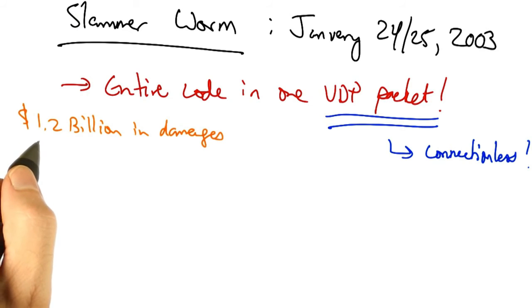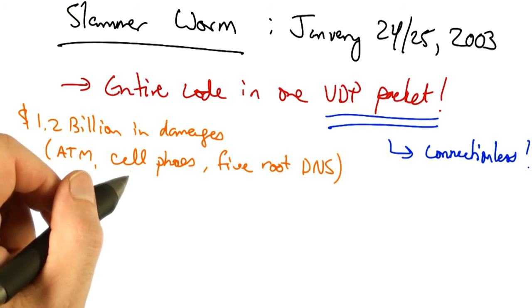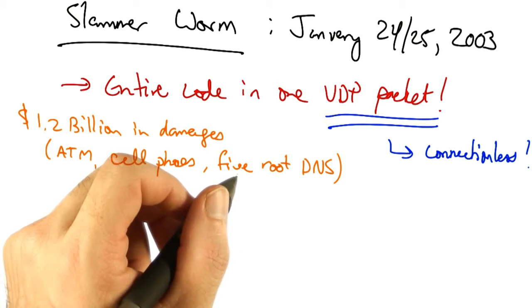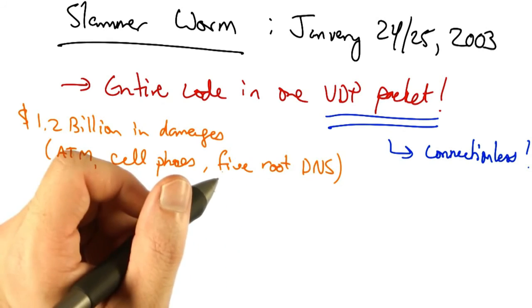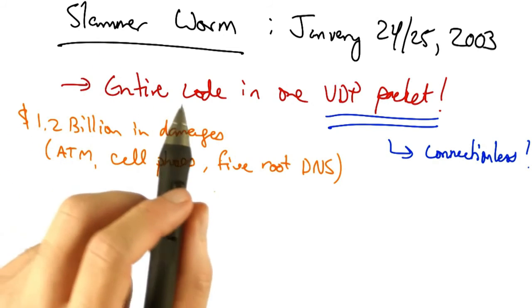The worm caused $1.2 billion in damage and temporarily knocked out many elements of critical infrastructure, including Bank of America's ATM network, an entire cell phone network in South Korea, five root DNS servers, and Continental Airlines' ticket processing software.